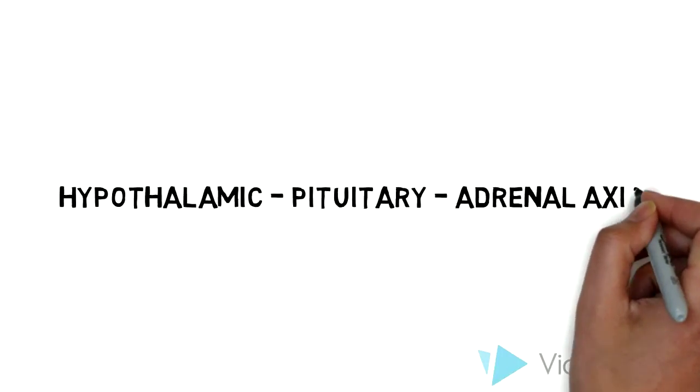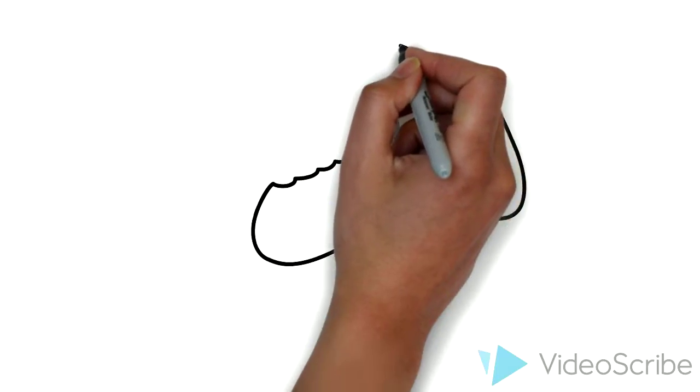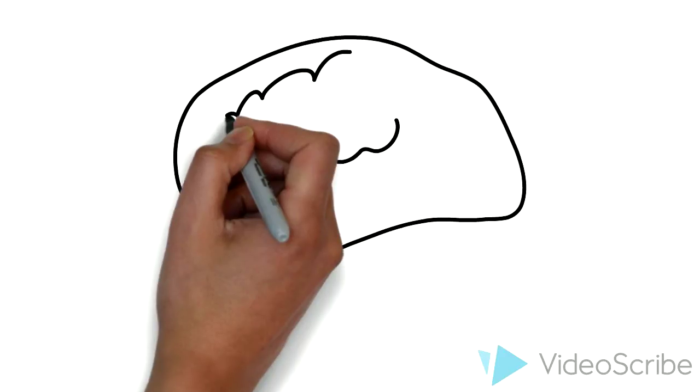There are three parts to the HPA axis. First, we have the hypothalamus. This can be thought of as the control center.